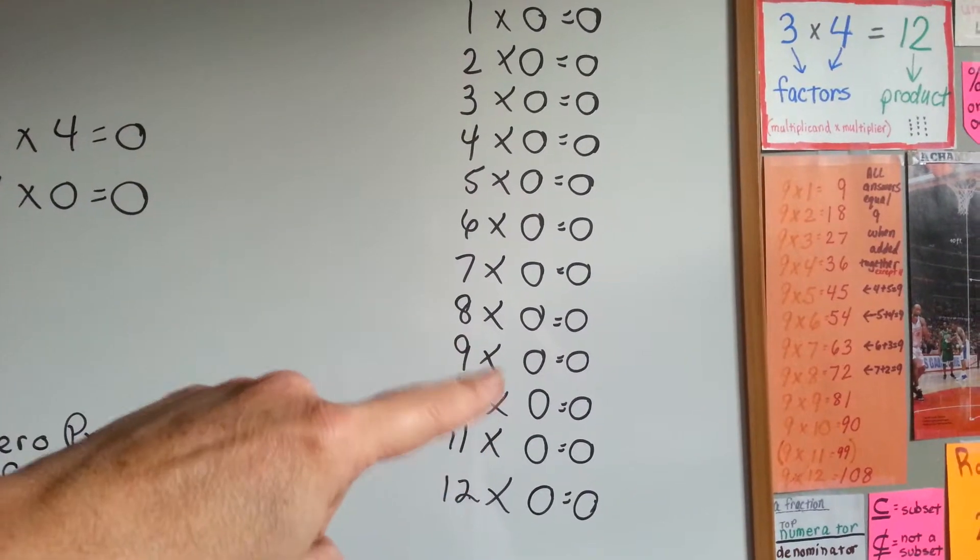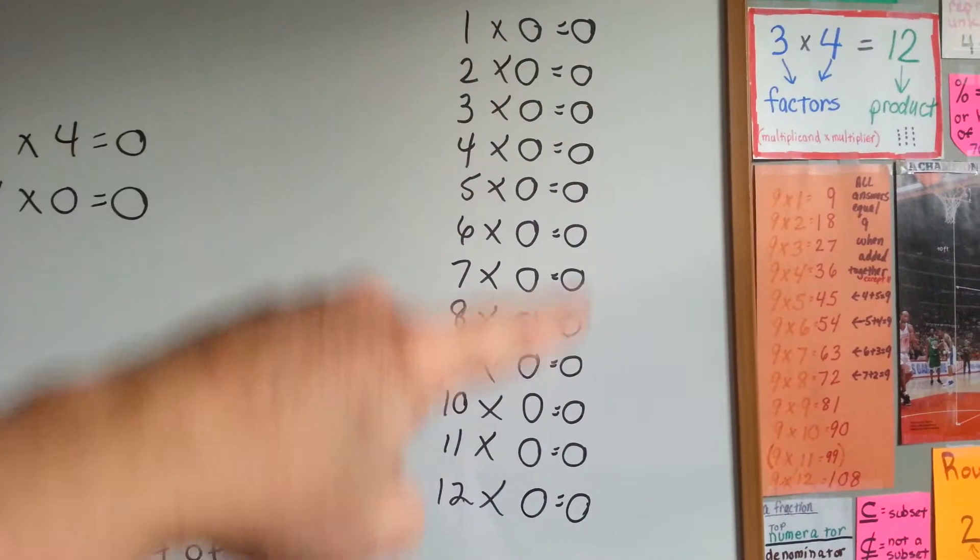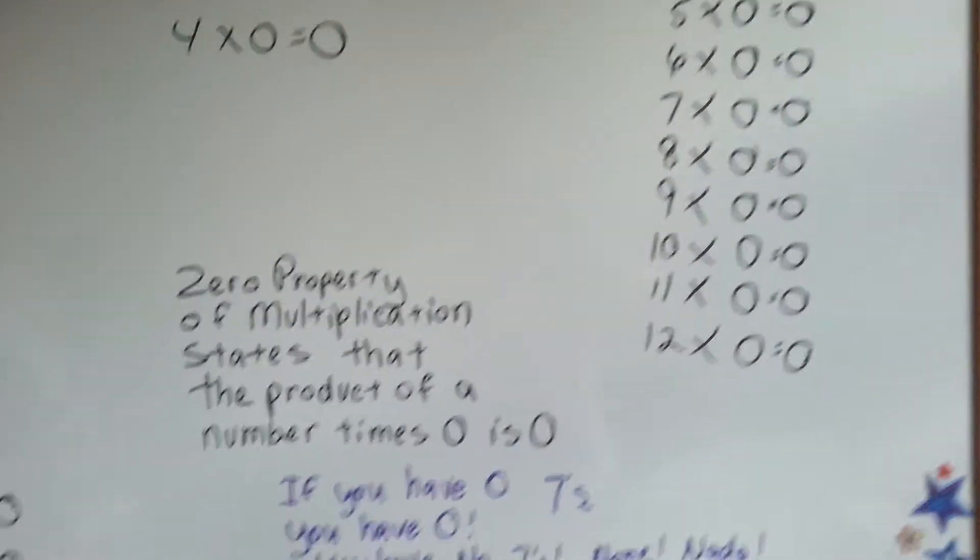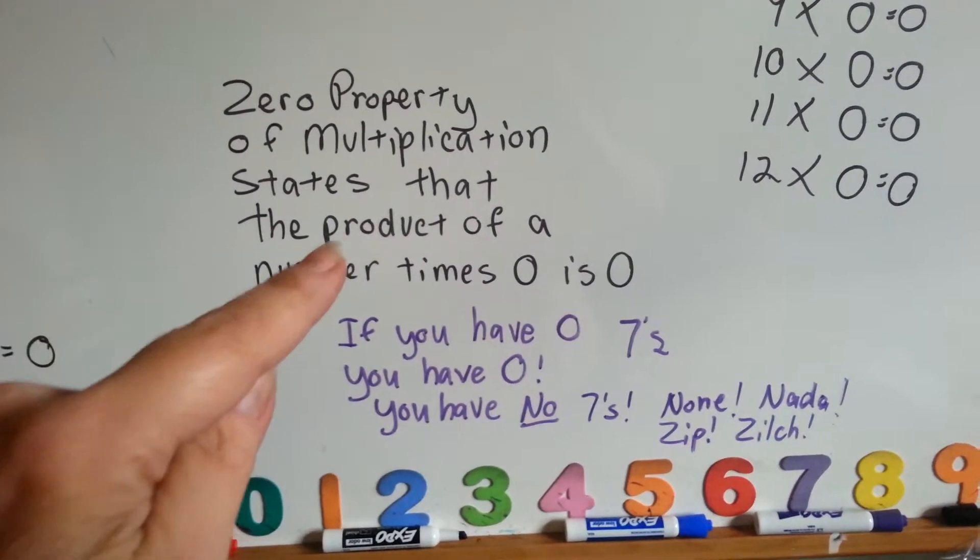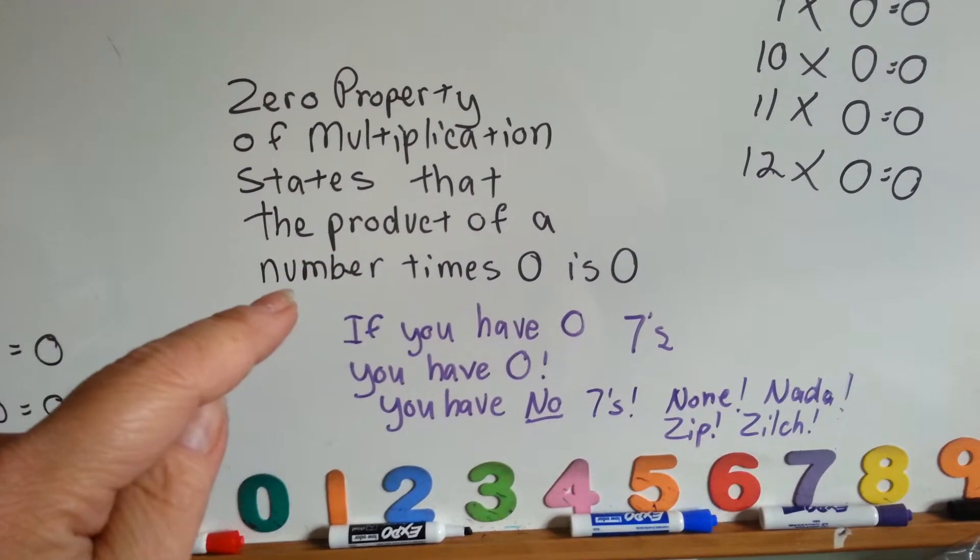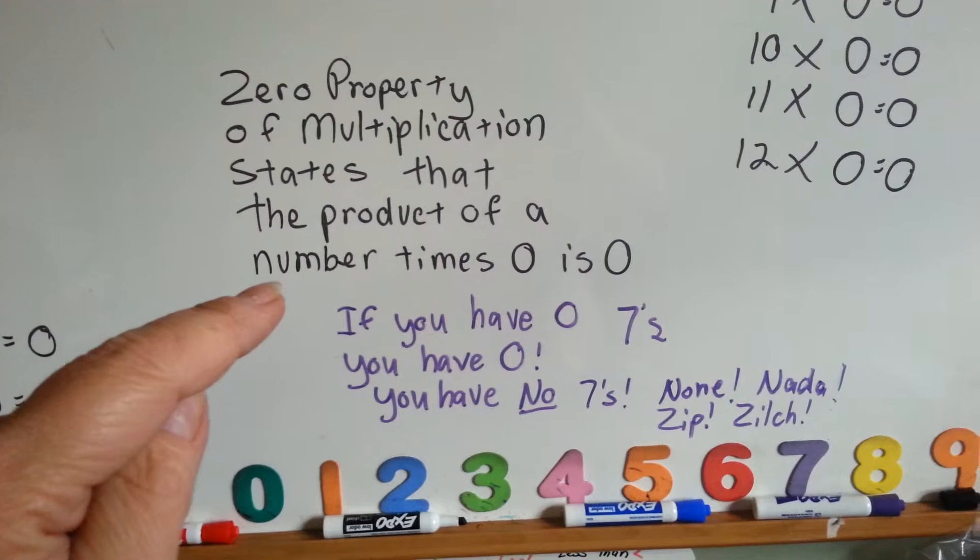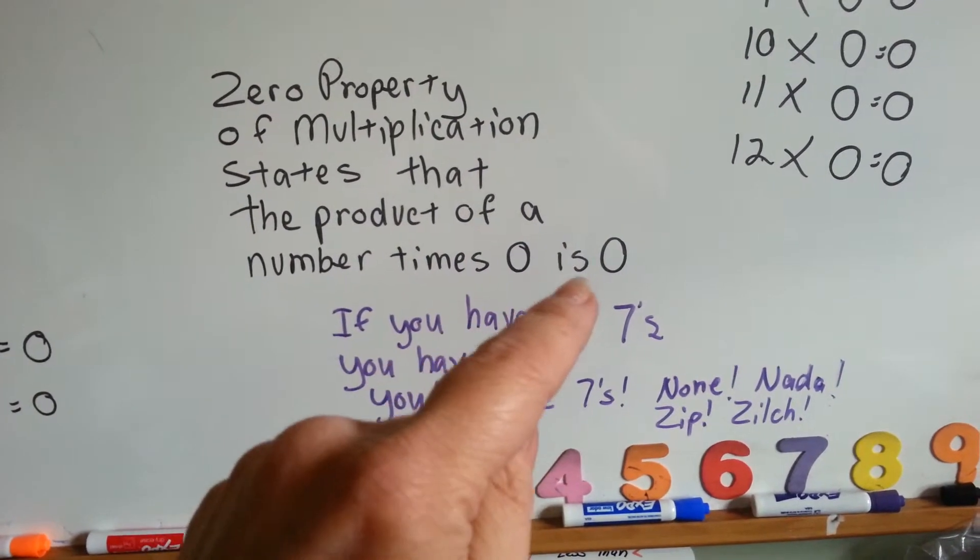Any number that you multiply by 0 is always going to have 0 for an answer. The 0 property of multiplication states that the product, the answer of a times table problem, of a number times 0 is 0.